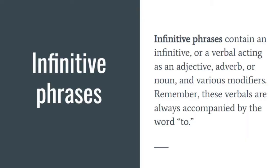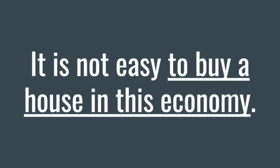The second kind is infinitive phrases. Infinitive phrases contain an infinitive — a verbal acting as an adjective, adverb, or noun — and various modifiers. Remember, these verbals are always accompanied by the word 'to.' For example: 'It's not easy to buy a house in this economy.' The verbal here is 'to buy,' and the rest — 'in this economy' — is what makes it a verbal phrase.